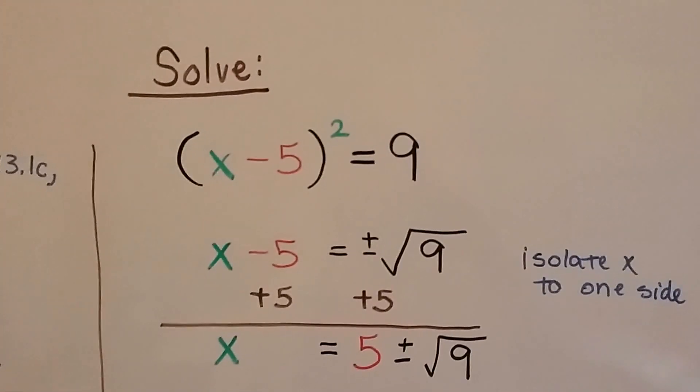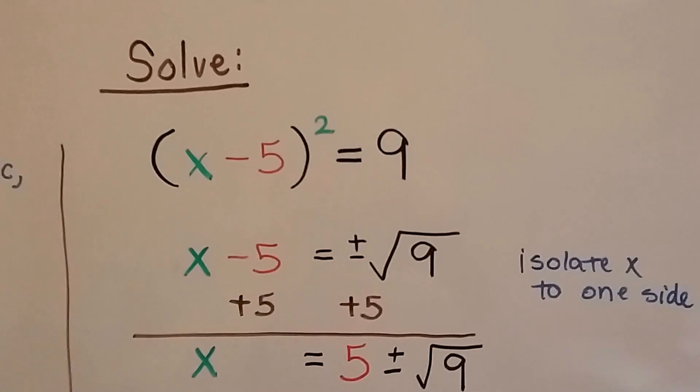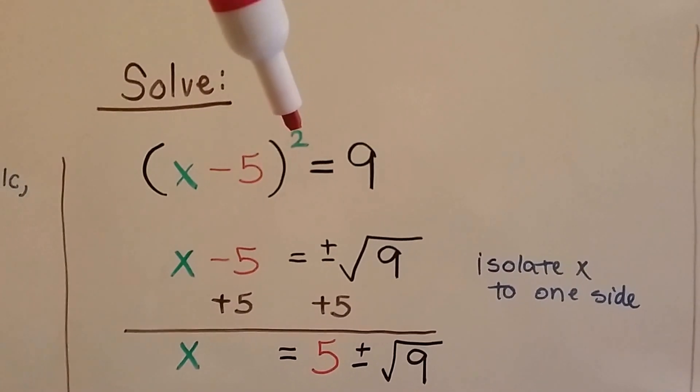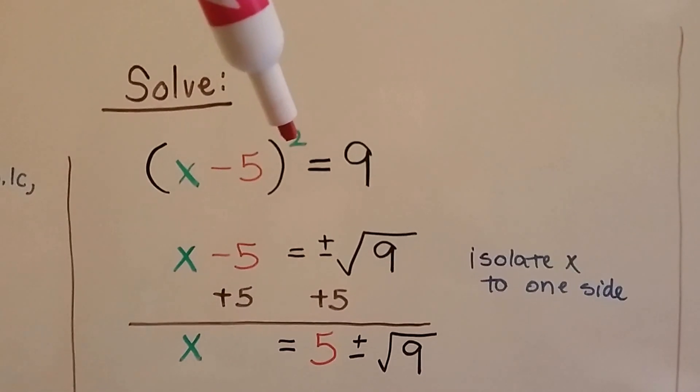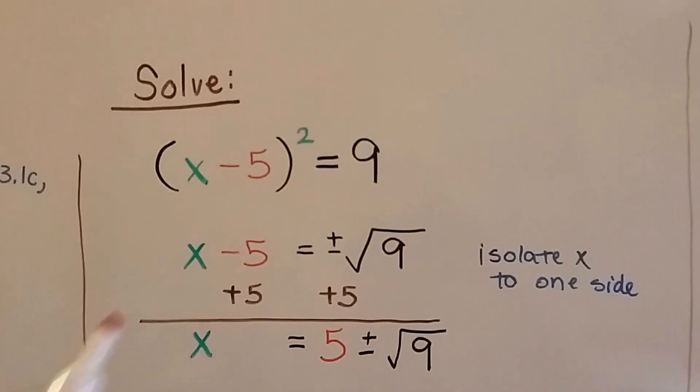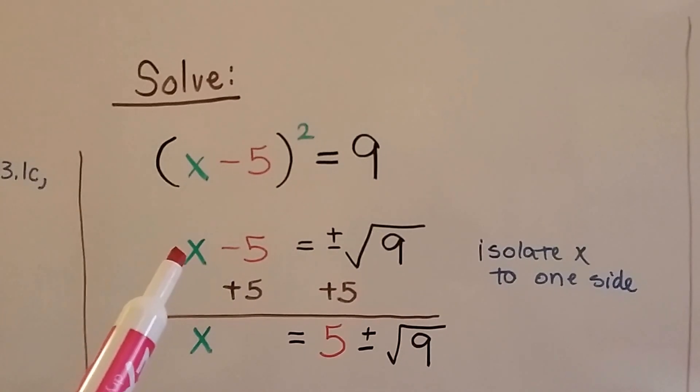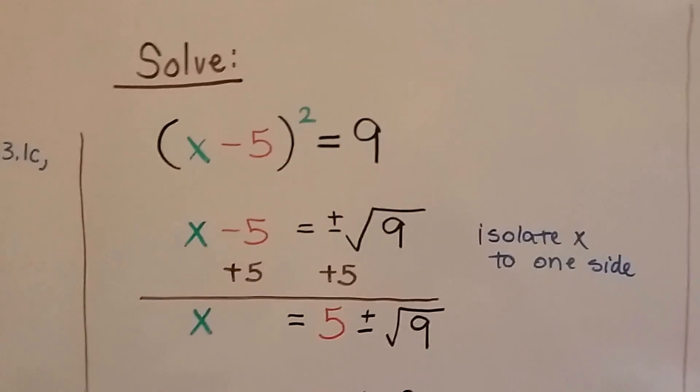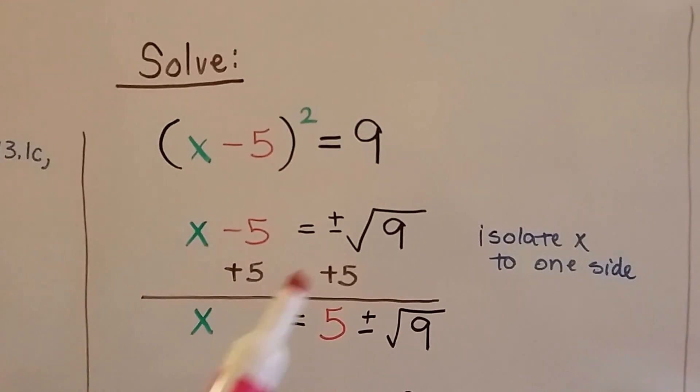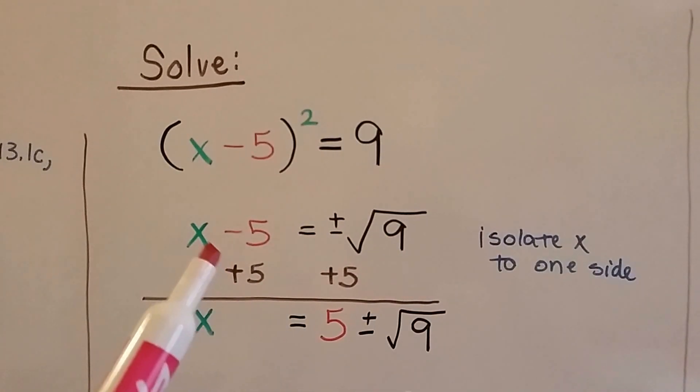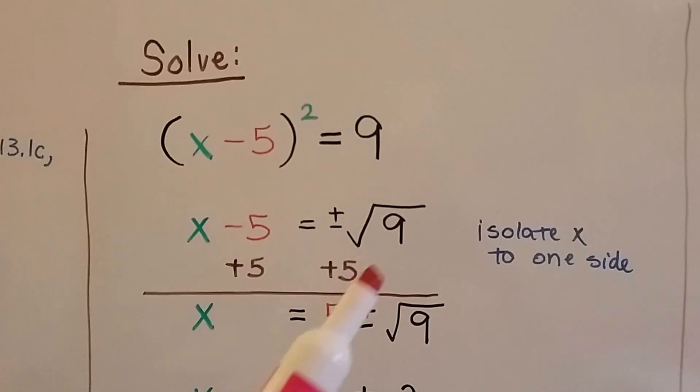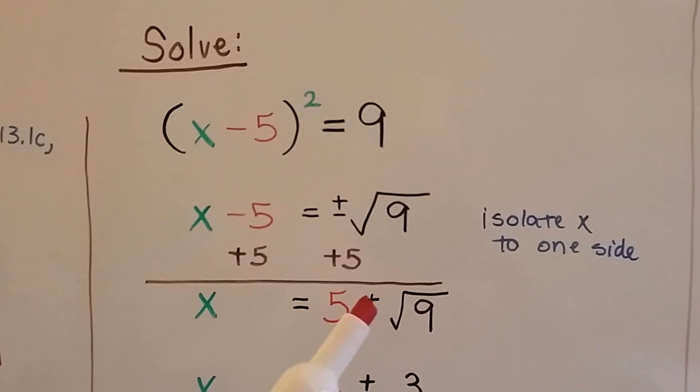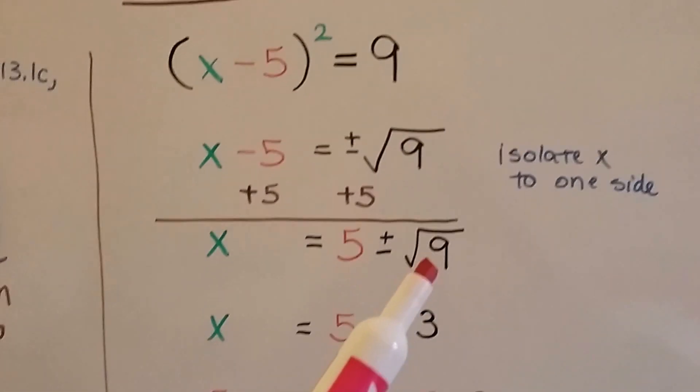to solve x minus 5 squared equals 9, as we've talked about before in this playlist and other videos, we can take this little two exponent square off and flip a radical sign to this side. And that gives us x minus 5 equals a positive or negative square root of 9. And the square root of 9 is a 3. But we're going to keep it here for now. So to isolate this x, we're going to add 5 to each side. So now we've got x equals 5, a positive 5 plus or minus the square root of 9.